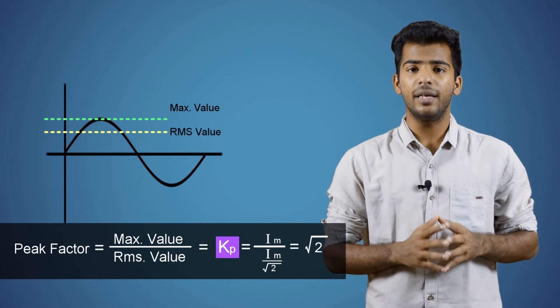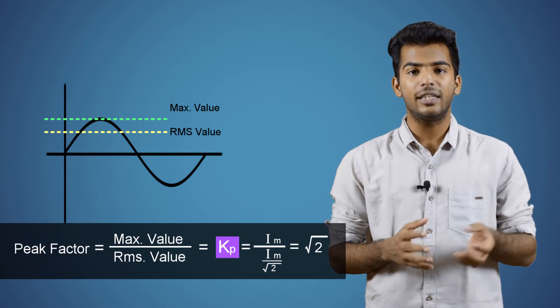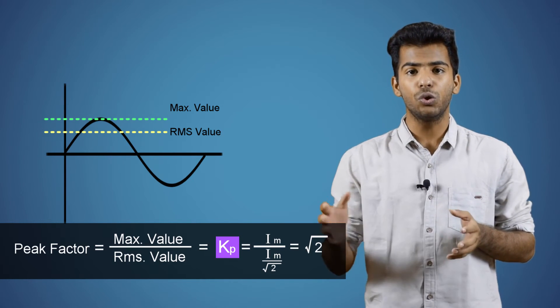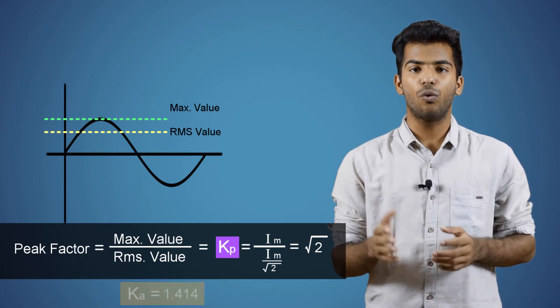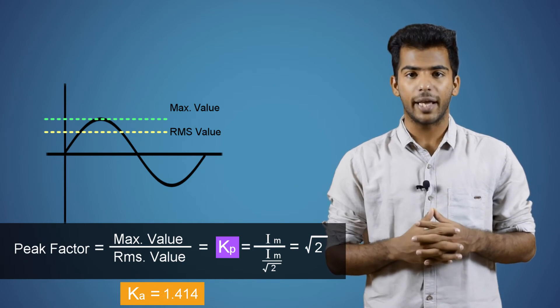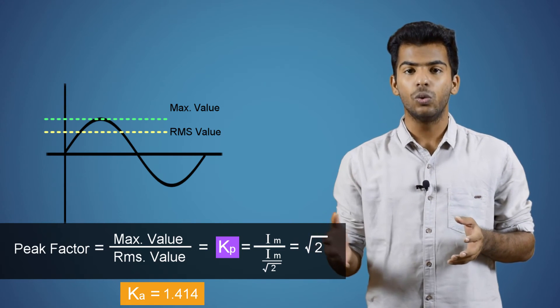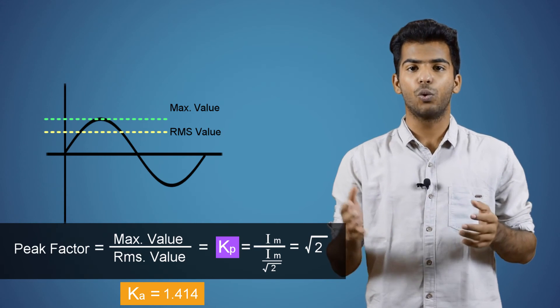At the end, it will be root 2. So, the peak factor of an alternating current will be root 2, that is 1.414. Even in the case of alternating voltage, it is max or peak voltage divided by Em by root 2, that is 1.414.